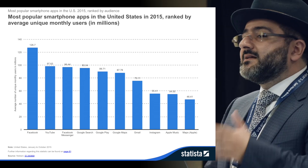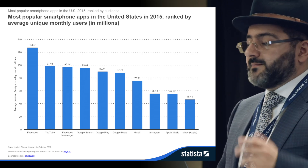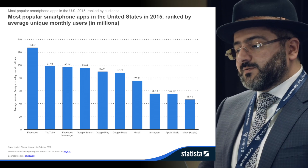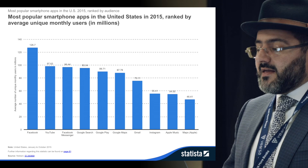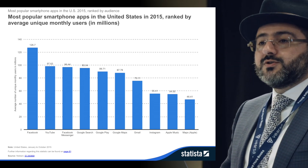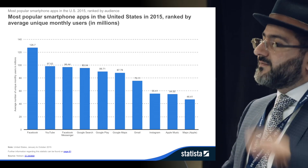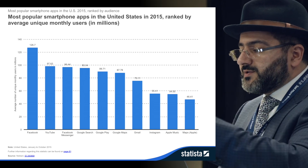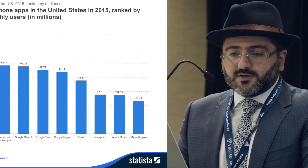Without being present in those three venues, you're most likely not going to be discovered the way you deserve. In reality, 126 million users monthly on Facebook, 97 million monthly on YouTube, and 95 million on Google Search engines — these are active, sustainable users. As of July 2016, those numbers increased by about 2% to 3%, putting Facebook at 149 million and growing.